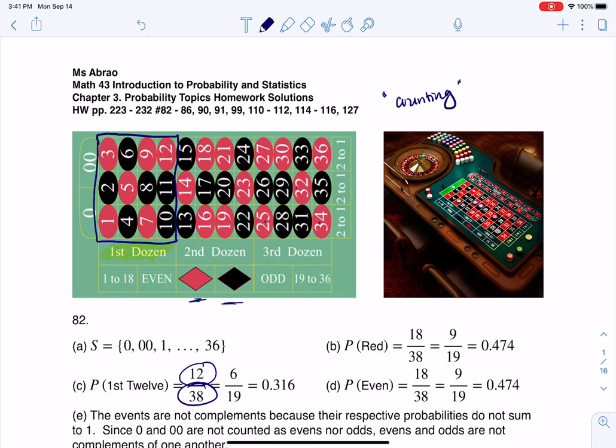And then part D says, what's the probability that you'd win if you bet on an even number? Well, if we bet on evens, again, we can go through and count the number of evens. One, two, three, four. And you're going to find out that once we get to 36, there are 18 evens, right, out of 38. And you might be saying, well, what about zero and double zero? Those aren't considered even or odd. They're just extra in the game of roulette to throw your odds off of winning.